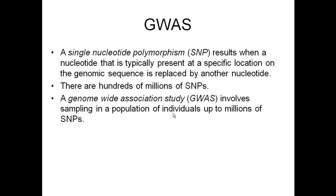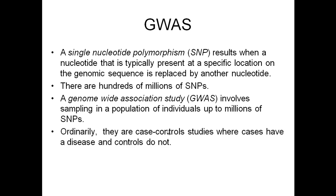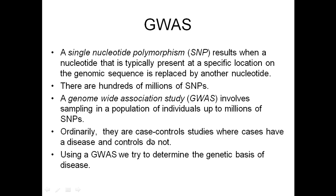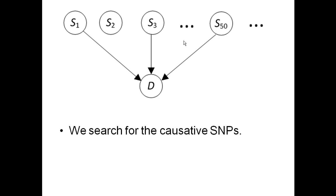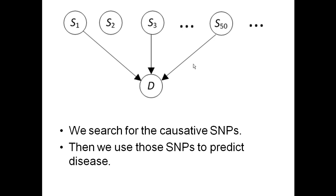A GWAS involves sampling in a population of individuals up to millions of SNPs. They're ordinarily done as case-control studies where cases have a disease and controls do not. Using a GWAS, we try to determine the genetic basis of disease. It might seem simple — just look at each SNP individually for its correlation with the disease — but the situation is more complicated. We have millions of SNPs, and maybe only these three have a causal effect. In the GWAS, we try to discover these causative SNPs from the data and then use them to predict disease.